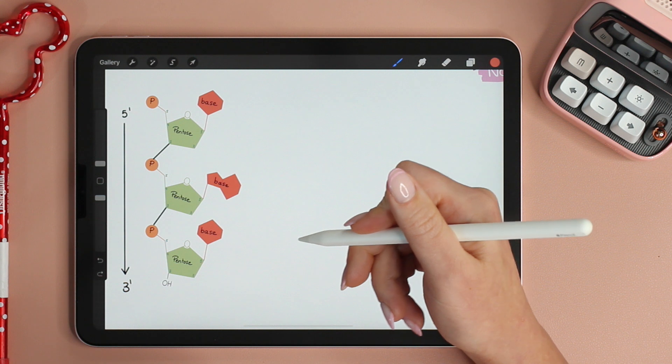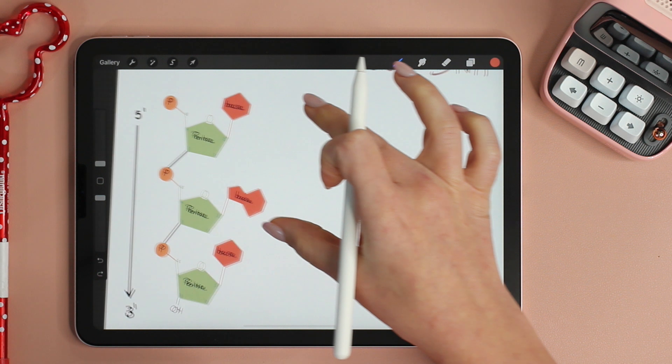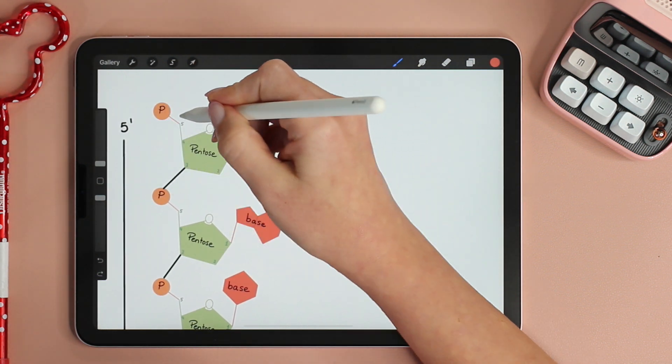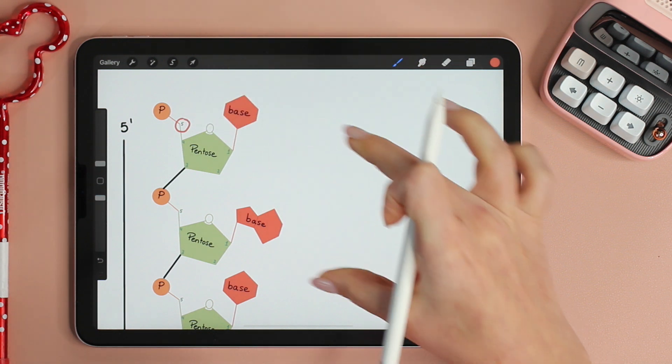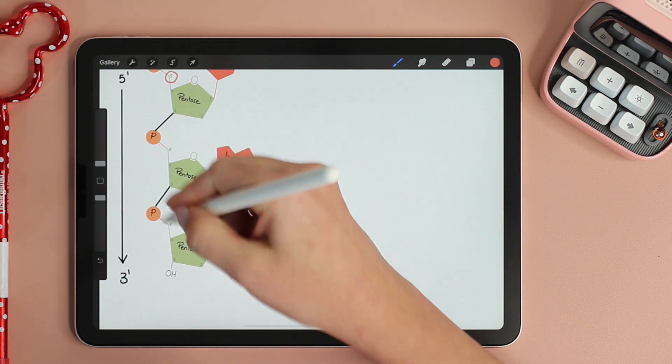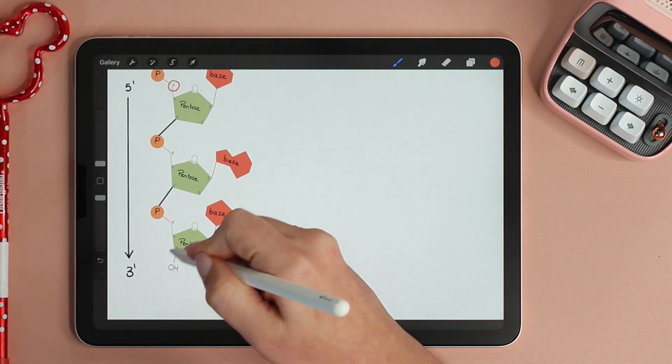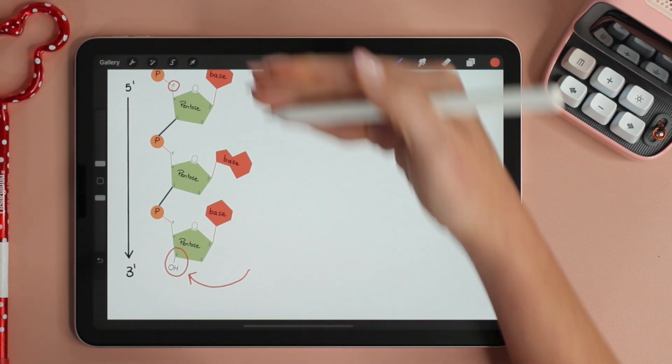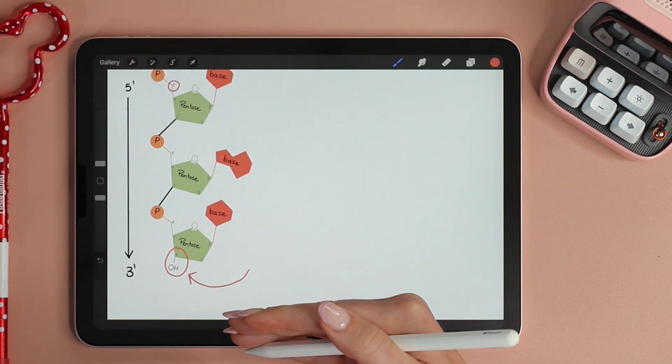Notice that the direction of this strand is five prime to three prime. Now, what does that mean? If you look at the first nucleotide, carbon number five is on the top, right? And as we add nucleotides, we're always adding it to carbon number three. If you notice the last nucleotide, carbon number three is open for a new nucleotide to be added. So the direction of the strand is five prime to three prime.